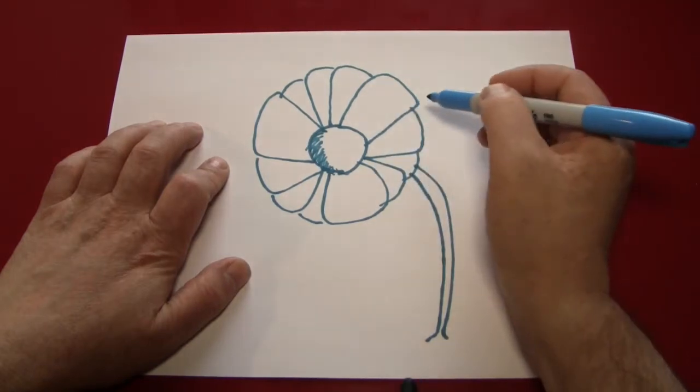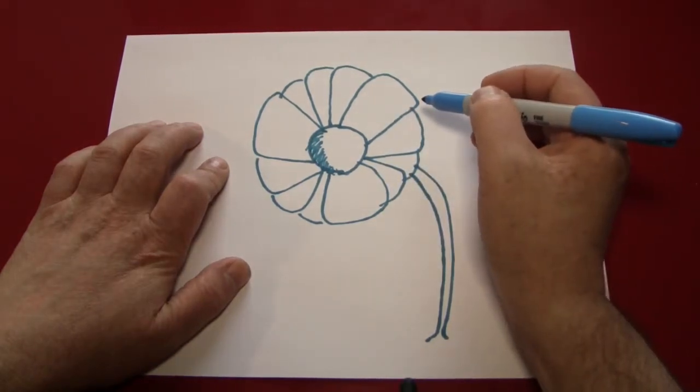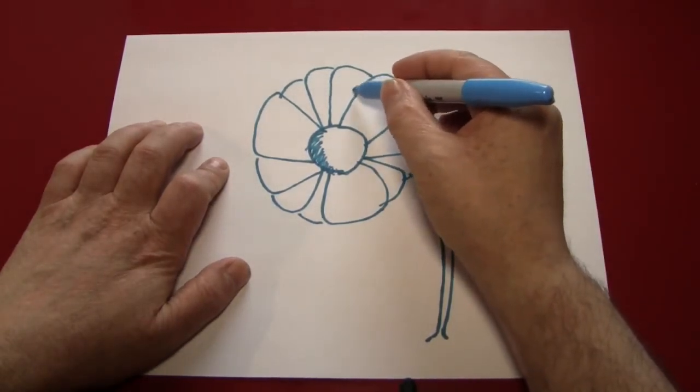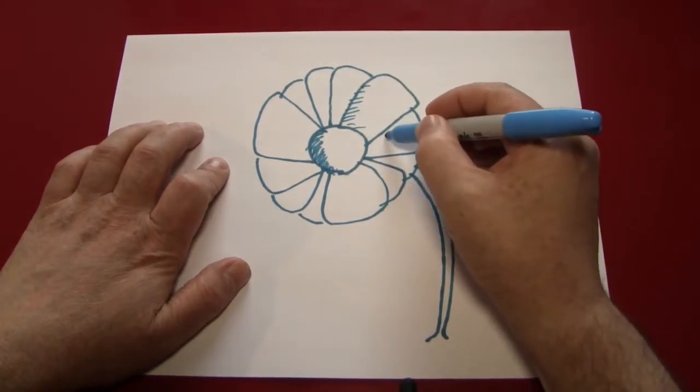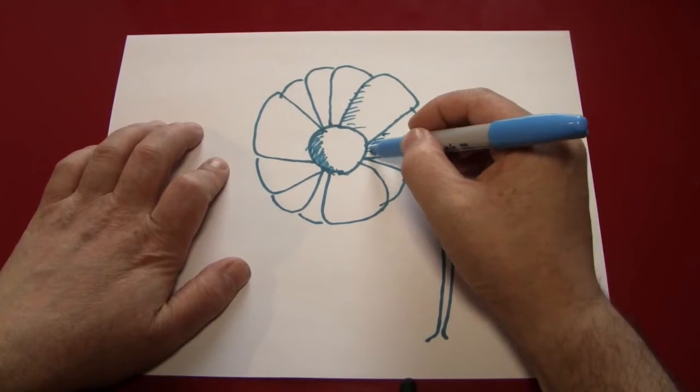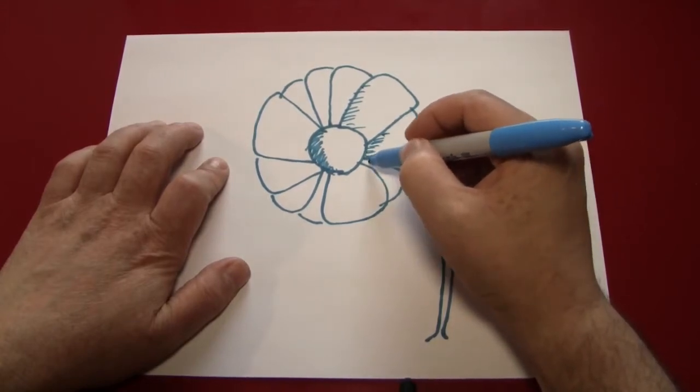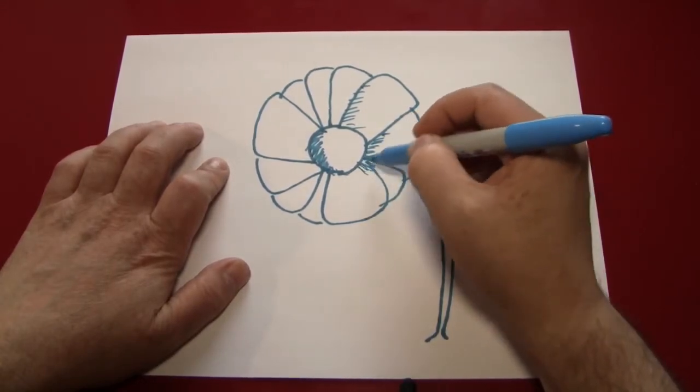That way it'll look more round. And you can do the same kind of general shading on all of the petals. And depending on which part of the flower the petals are on, depends on where you're going to put that shading.